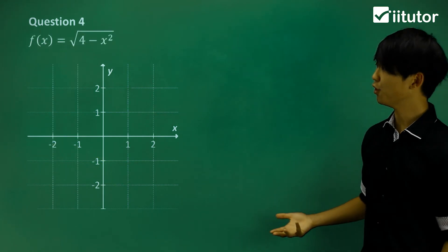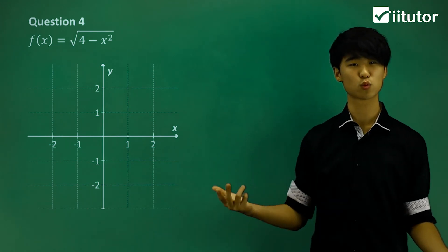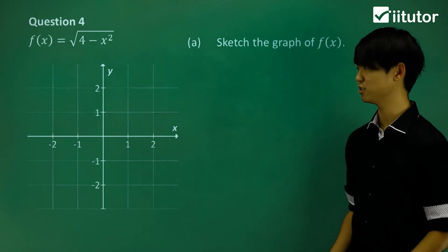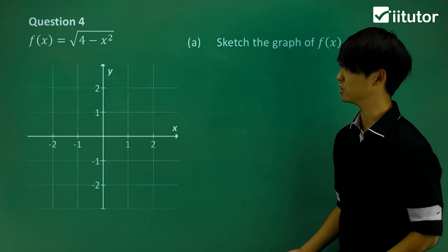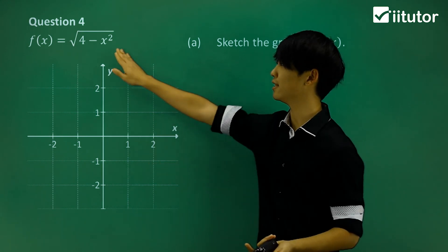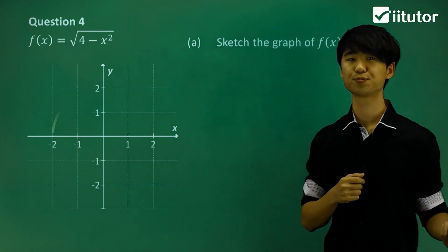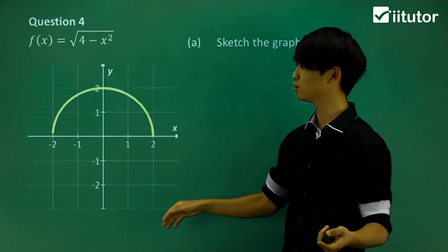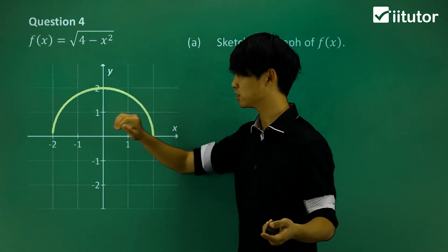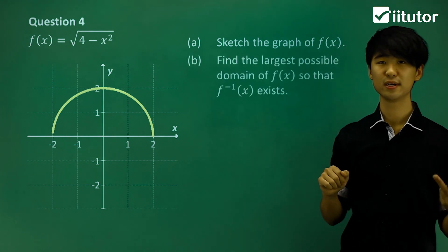In question 4, we have f(x) = √(4 - x²). In part A, we sketch it. If you look carefully, this is a semicircle with radius 2, and since it's positive, we take the upper (positive) half of the circle.